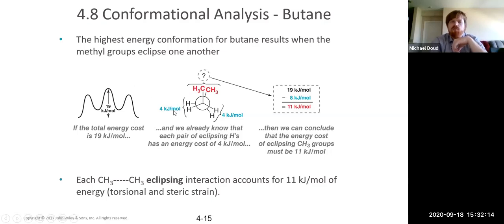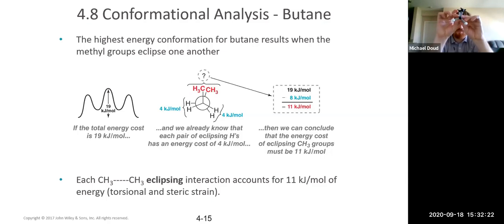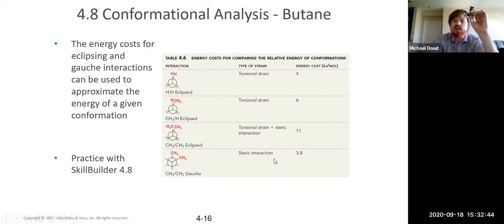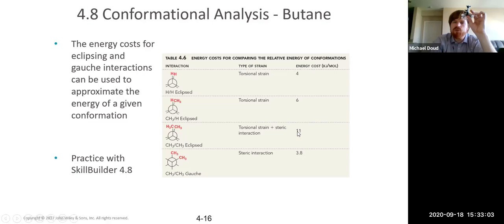To summarize: the most stable conformation occurs when the biggest groups are anti to one another. The least stable conformation is when the biggest groups are eclipsing one another. For the energy costs: hydrogen-hydrogen eclipse = 4 kJ/mol; hydrogen-methyl eclipse = 6 kJ/mol; methyl-methyl eclipse = 11 kJ/mol; methyl-methyl gauche = 3.8 kJ/mol. For the least stable conformation, we have two hydrogen-hydrogen eclipsing interactions (8 kJ/mol total) plus the methyl-methyl eclipsing interaction (11 kJ/mol), giving 19 kJ/mol.